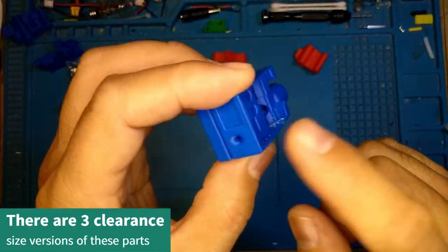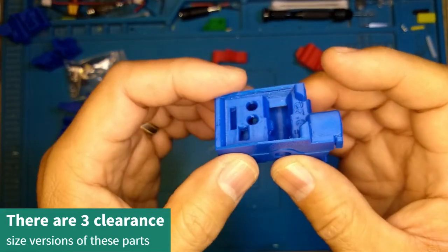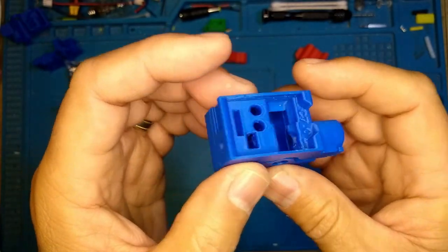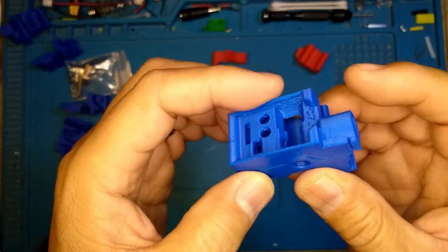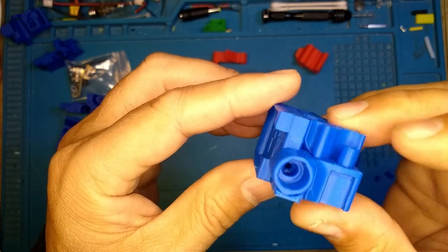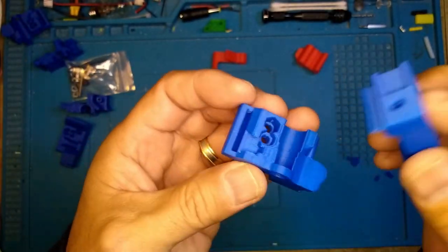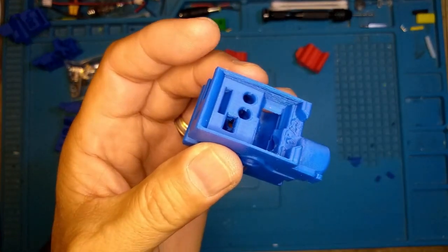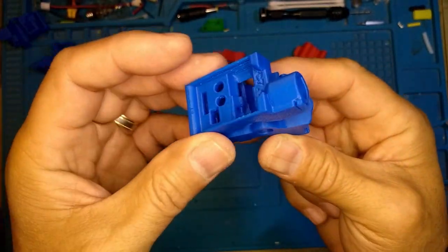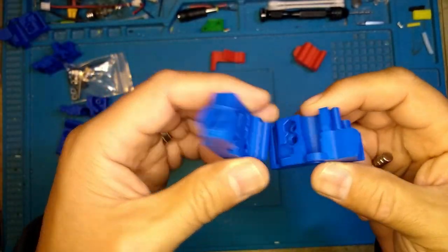If it's not like that, then print out another part. Maybe adjust your extrusion multiplier, your flow. Dial it down a couple of percent, two and a half percent, three percent if you need to. But you really want it to be like that. It's really important.